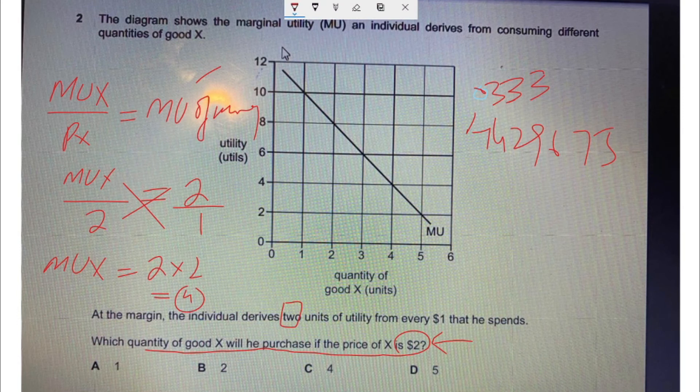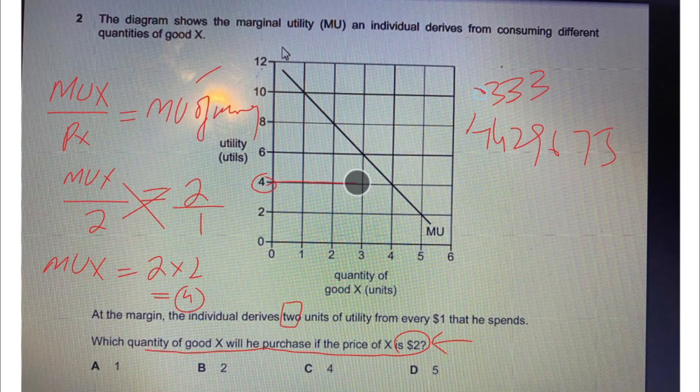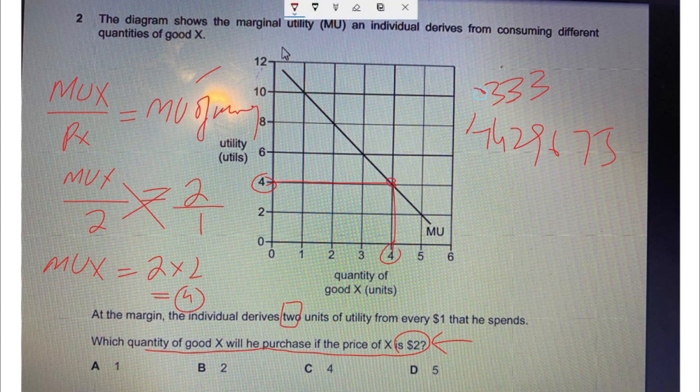You can see this is 4 units of utility, which is achieved when 4 units of good X are consumed. Hope you can answer this question.